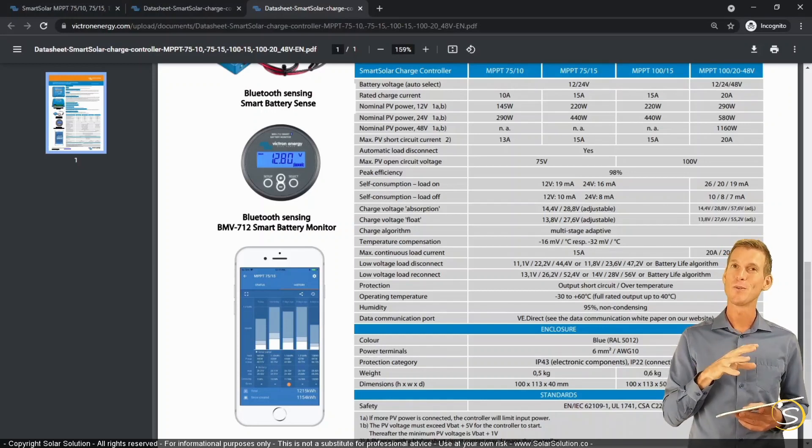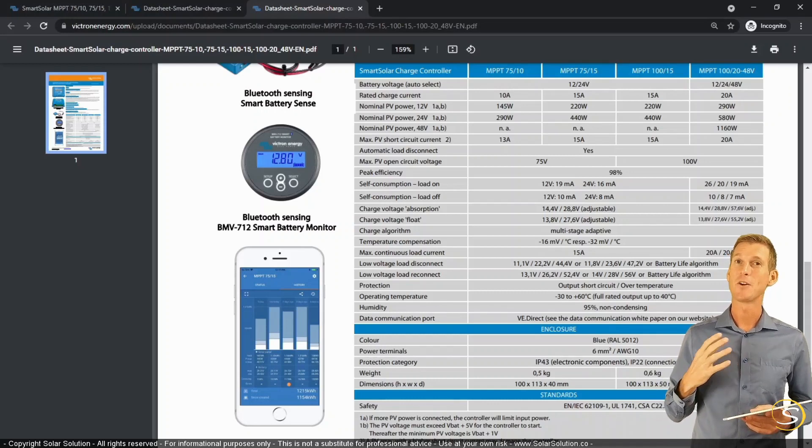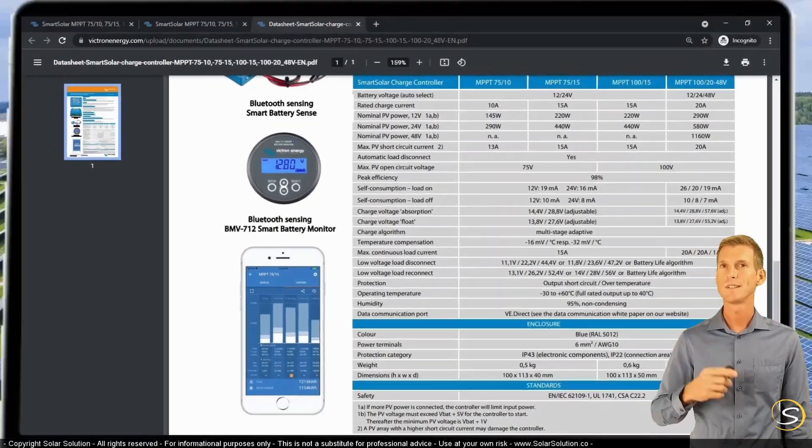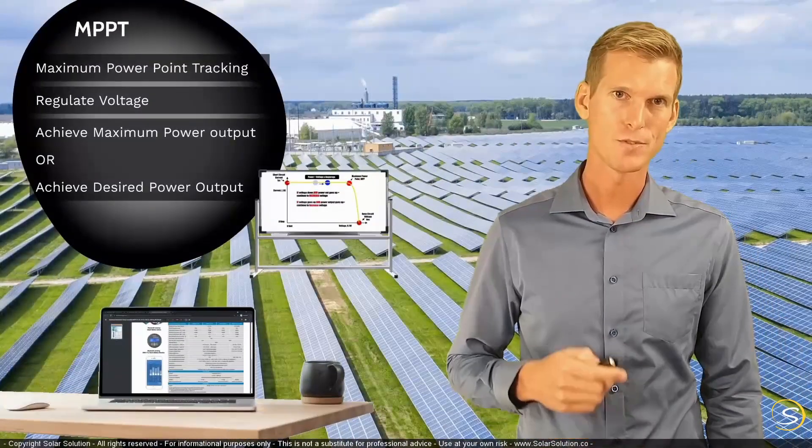realize that the open circuit voltage of a panel is also heavily influenced by the cell temperature. Because if a module is colder, it will actually produce a higher open circuit voltage. The voltage of a solar panel is higher when the cell temperature is lower.